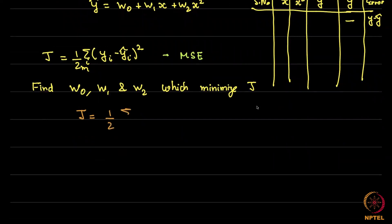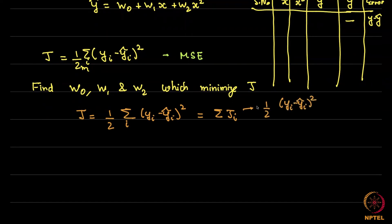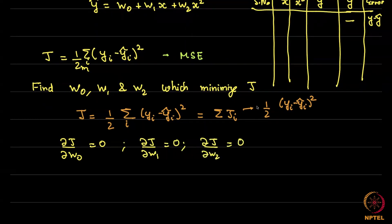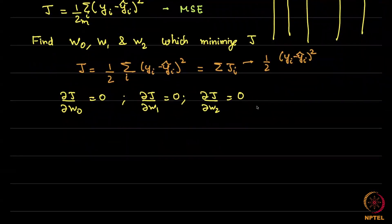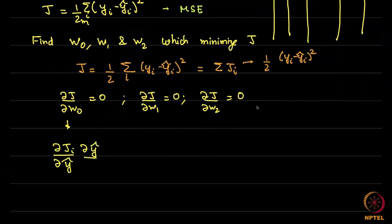J is (1/2)Σᵢ(yᵢ − ŷᵢ)², which we call Σⱼᵢ, just like before where Jᵢ = (1/2)(yᵢ − ŷᵢ)². We set ∂J/∂w₀ = 0, ∂J/∂w₁ = 0, and ∂J/∂w₂ = 0. Calculating these is not very different from what we did before. We apply the chain rule: ∂Jᵢ/∂w = (∂Jᵢ/∂ŷ)(∂ŷ/∂w).